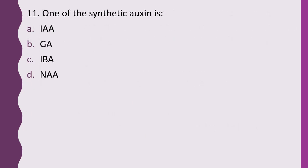Question 11. One of the synthetic auxins is: IAA, GA, IBA, or NAA. The correct answer is option D, NAA or naphthalene acetic acid — it is a synthetic auxin.